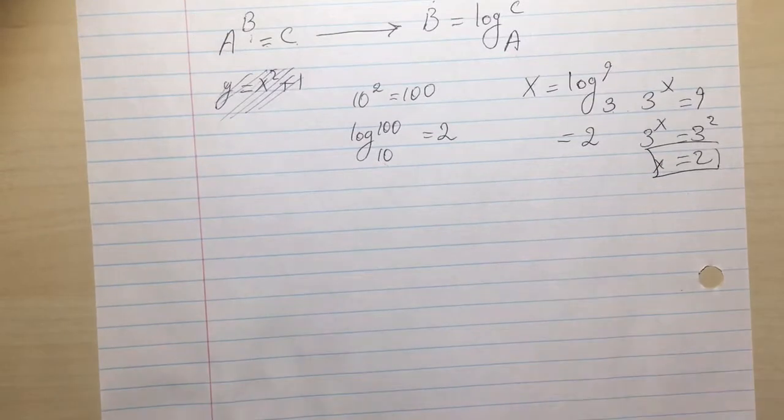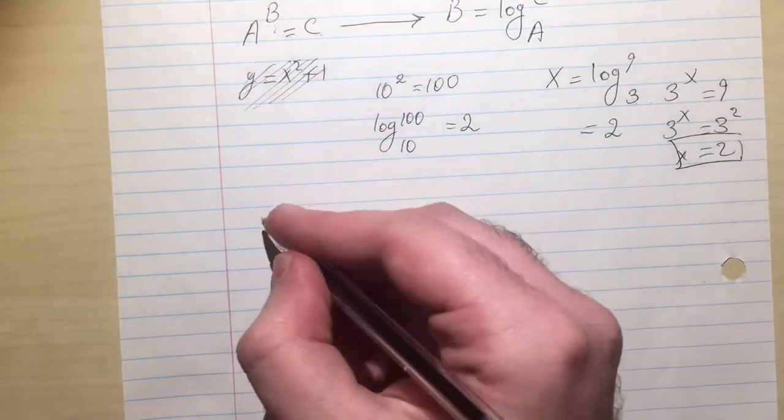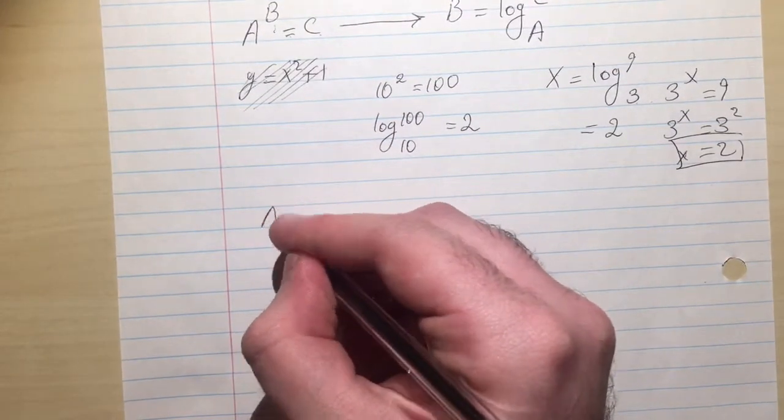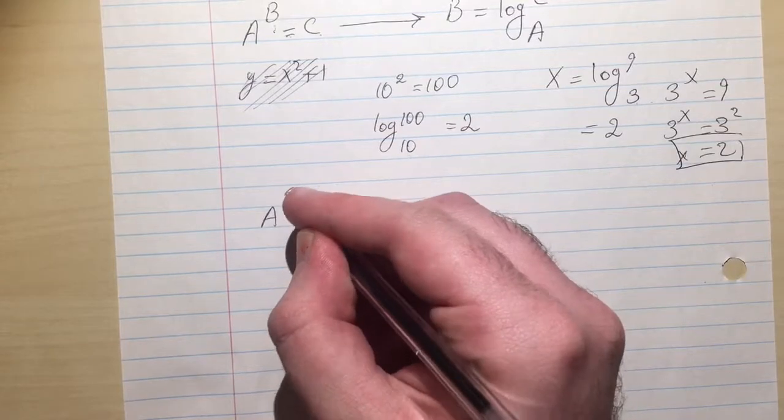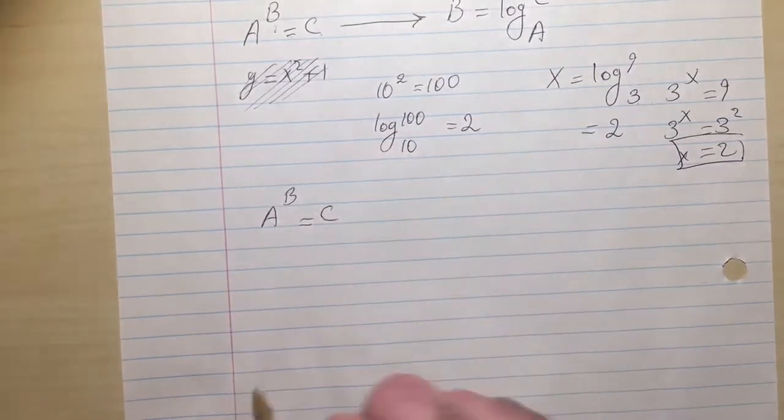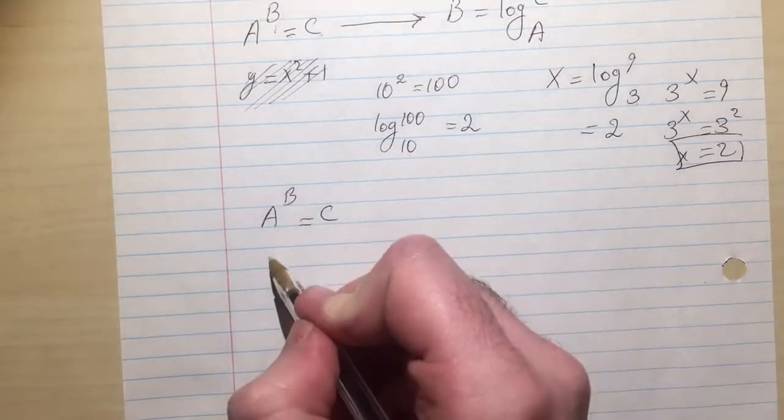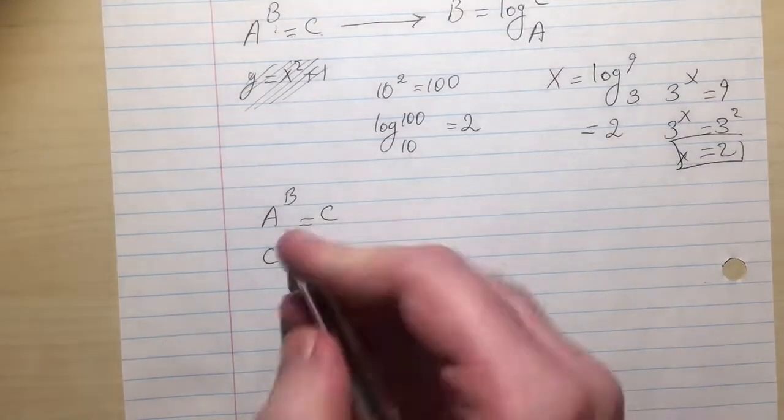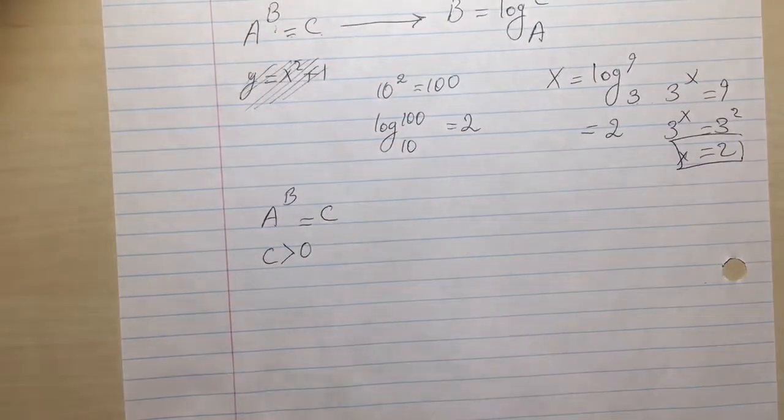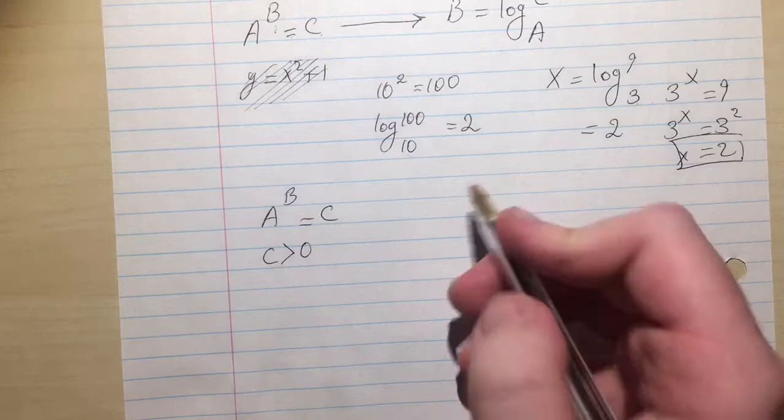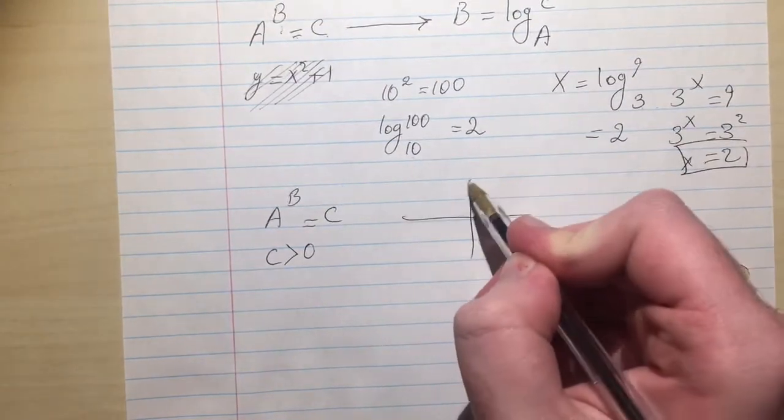In logs we have some restrictions. In the original form of a log which is an exponential function, we have some restrictions. C is always positive and not 0. An exponential function doesn't touch the X axis, it only approaches it.